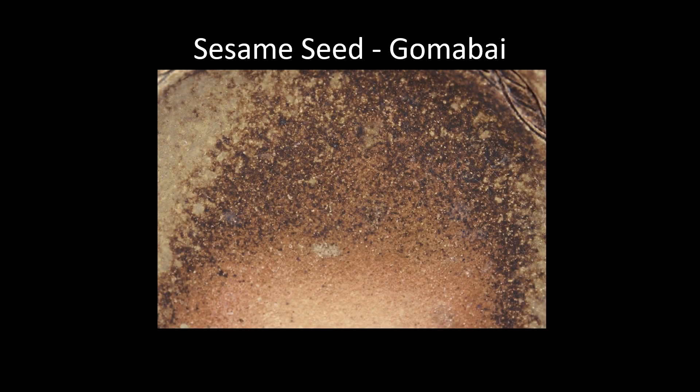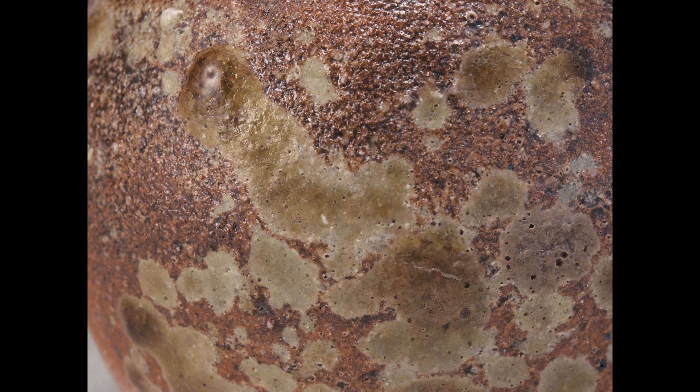So the first one is sesame seeds — these little golden spots. Gomabai is the Japanese term for the sesame seed. This is a piece that's further away and just gets little spots, little deposits of ash — little sprinklings of ash on them. Usually you see it as separate spots.